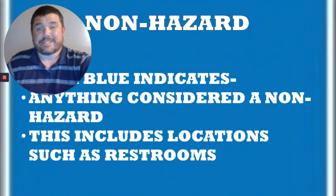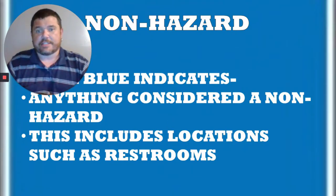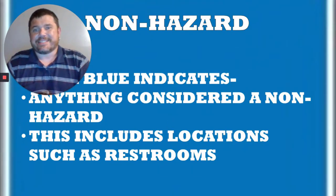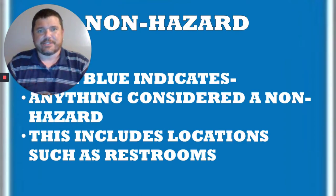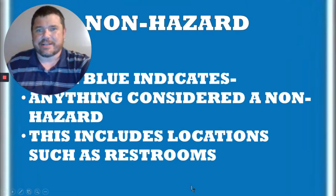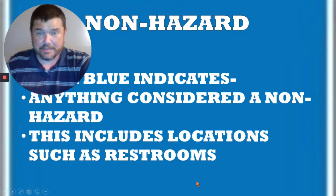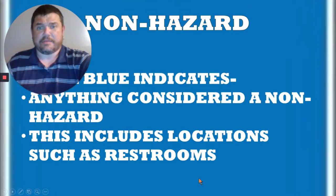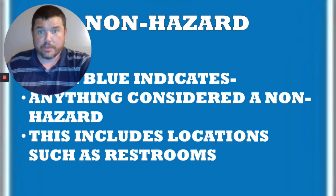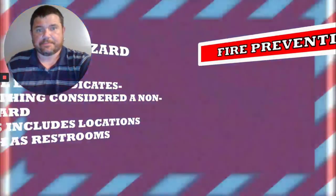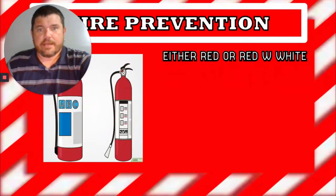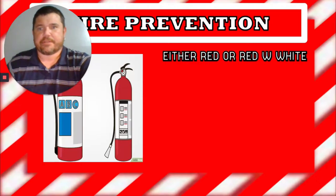The next sign is royal blue — a solid royal blue with no contrasting colors behind it. This is a non-hazard sign. It's going to show particular points you might want to be at, but not anything hazardous. There are no hazards in whatever area it's talking about. This could be a lobby, a conference room, a restroom — things like that.